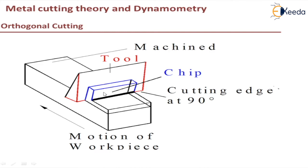If we compare orthogonal to oblique cutting, all the analysis which we perform is on orthogonal cutting. Any analysis of the oblique cutting process also applies to orthogonal cutting. However, oblique cutting is more difficult to analyze, so many authors have attempted to analyze only orthogonal cutting. But you can obtain forces directly using a dynamometer in the case of oblique cutting.